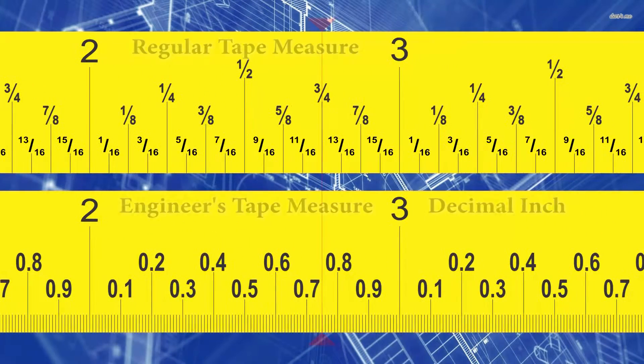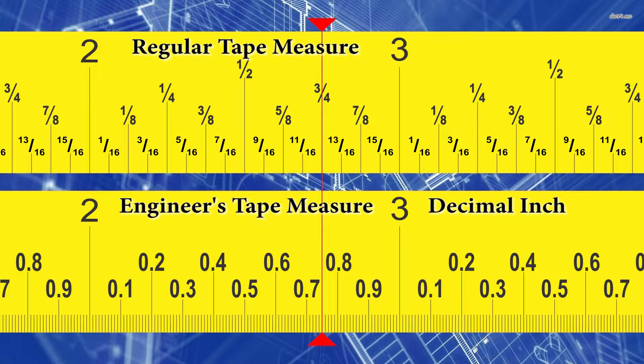Now let's draw a line down to our engineer's tape measure that has decimal inches on it. And look at that. We're at 2.75 inches on that decimal tape measure.